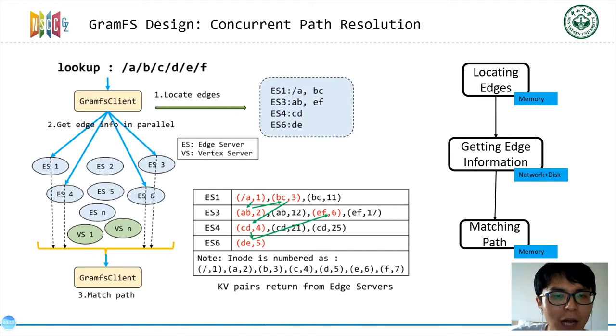The path resolution can be performed in parallel. We illustrate the process of concurrent path resolution on this page. It mainly consists of three steps: locating edges, getting edge information, and matching paths.